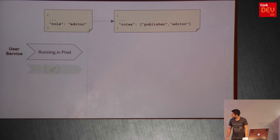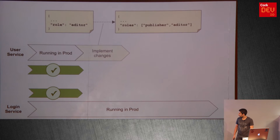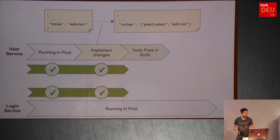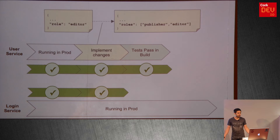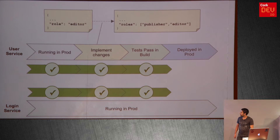The user class gets refactored, the unit tests get refactored, and everything looks fine for the user service. But we can predict that this might have negative consequences. The user service tests run in production — no problem, monitoring is all green, no errors. The login service has been running for months and nobody's really changing it — it still works fine. The user team implements the change, commits it, the build runs, no problem, they've refactored the tests to expect multiple roles. Everything looks fine, but the login service is still running, unaware that something is creeping up.